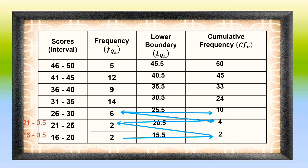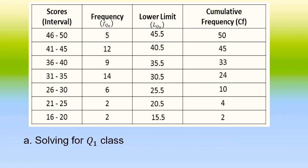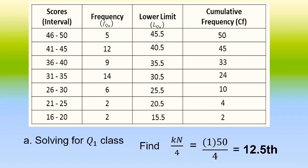After we have completed the table, the next thing to do is identify the Q sub k class, and afterwards the class of the second quartile and the class for the third quartile. Let us begin our solution by finding the Q sub 1 class. To solve for the Q sub 1 class, we use the formula k times n all over 4. With k equal to 1 and n equal to 50, divided by 4, the result is equal to 12.5.